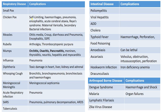Complications: chickenpox is usually self-limiting; complications include hemorrhage, pneumonia, encephalitis, acute cerebellar ataxia, Reye syndrome, maternal varicella, and secondary bacterial infections. Measles complications include otitis media, croup, diarrhea, pneumonia, encephalitis, and SSPE (subacute sclerosing panencephalitis). Rubella complications include arthralgia and thrombocytopenic purpura. Mumps complications include orchitis and ovaritis.